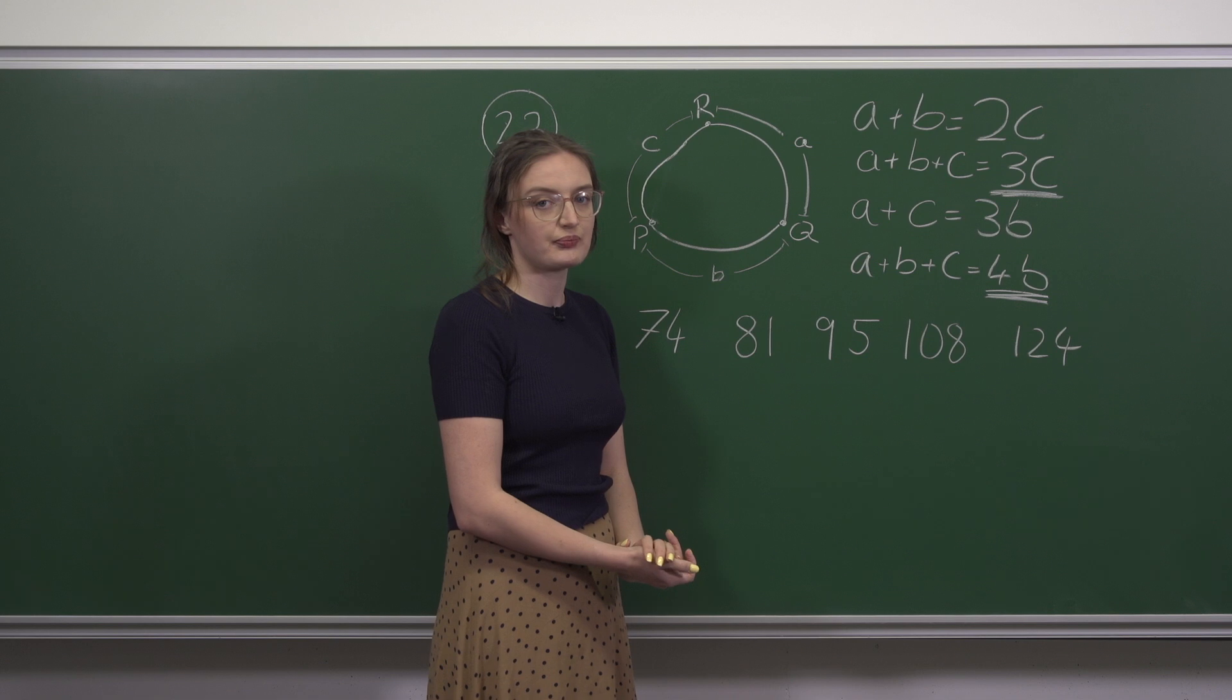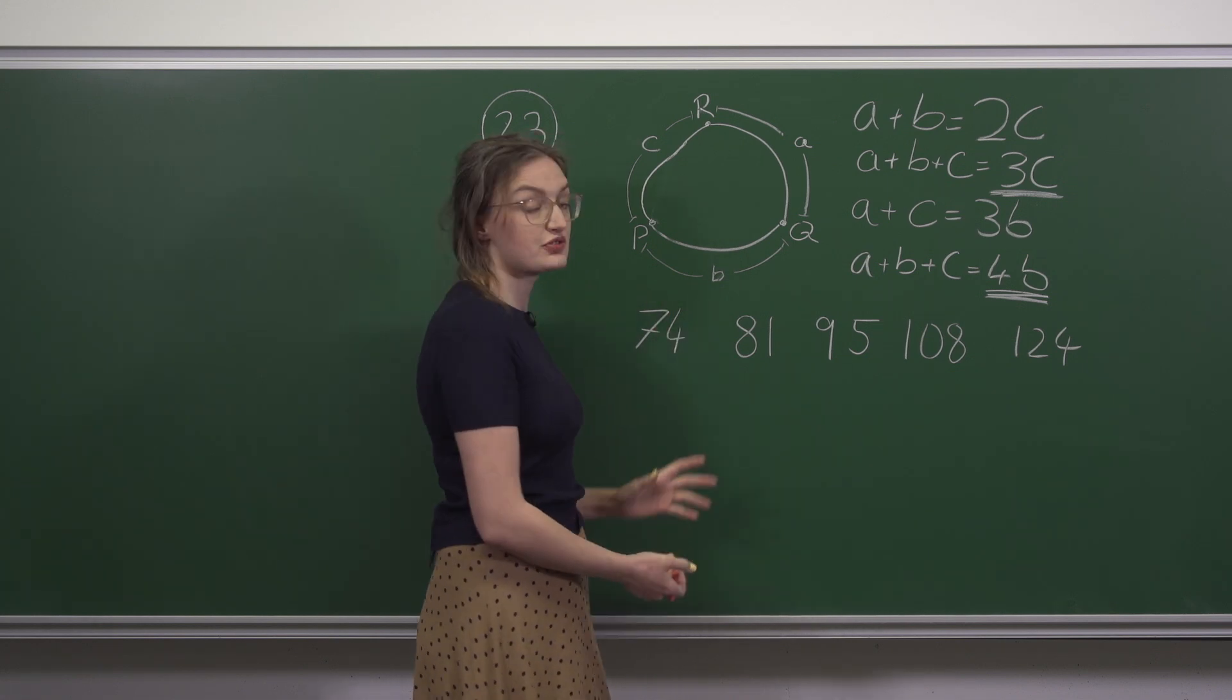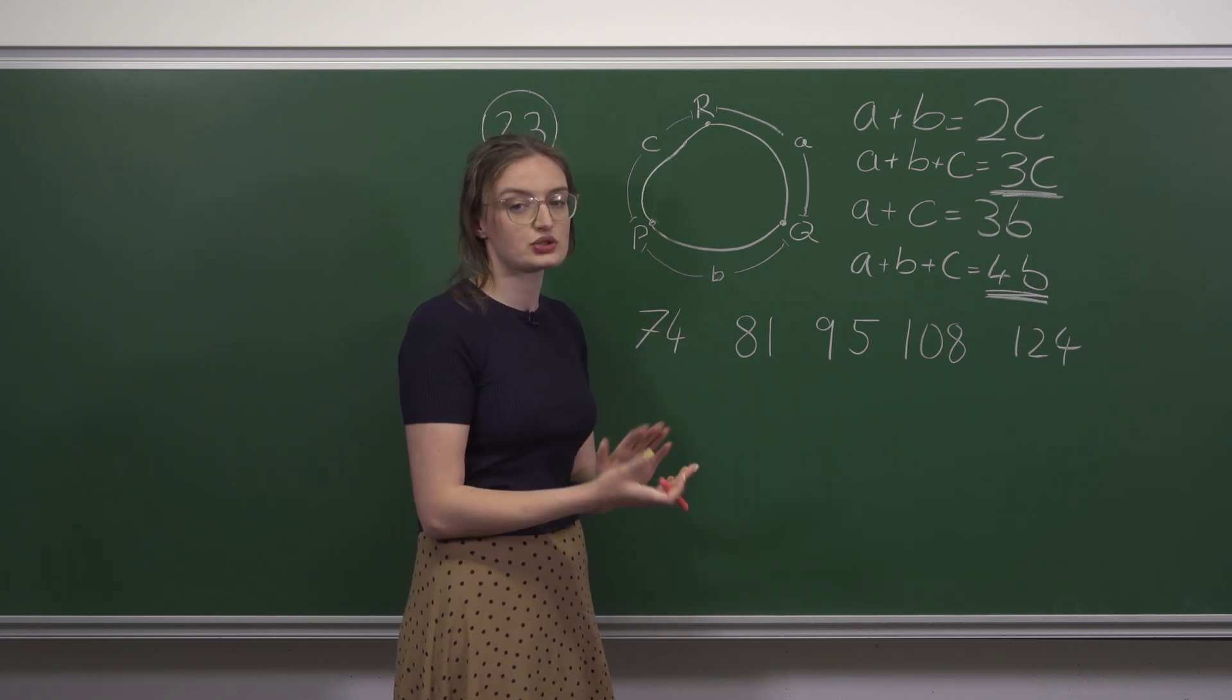Let's start with divisibility by 3. I have a really neat trick for checking if a number is divisible by 3. A number is divisible by 3 if and only if the sum of its digits is also divisible by 3.